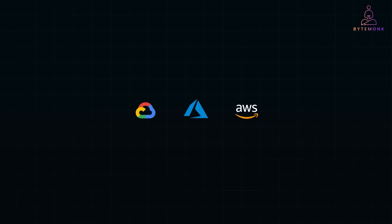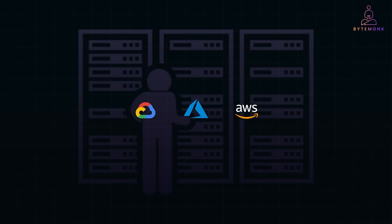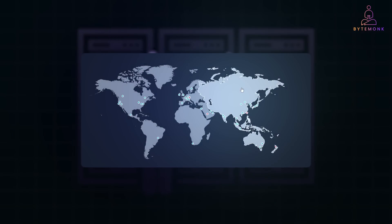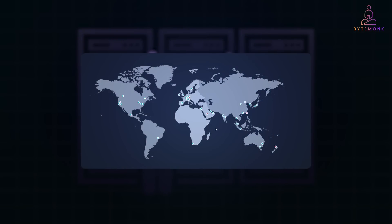Cloud providers basically abstract data center complexity. So instead of buying physical servers and setting it up in a private data center, cloud providers allow you to rent computing power, storage, and network resources on demand. This means businesses and developers don't need to worry about hardware maintenance, power supply, or physical security. AWS, GCP, and Azure operate multiple data centers worldwide, known as regions and availability zones. And this allows users to deploy applications closer to their customers, improving performance and reliability.